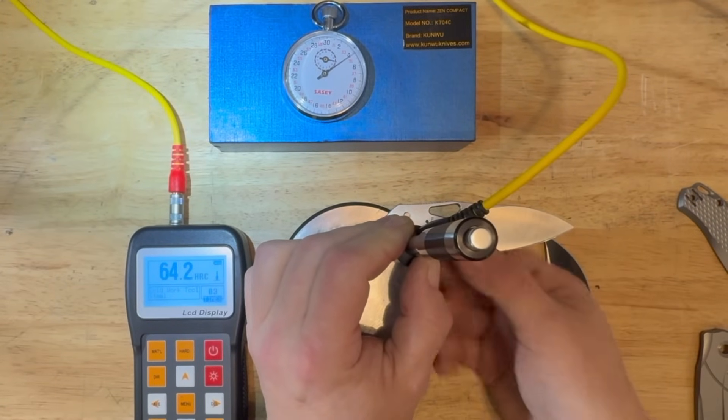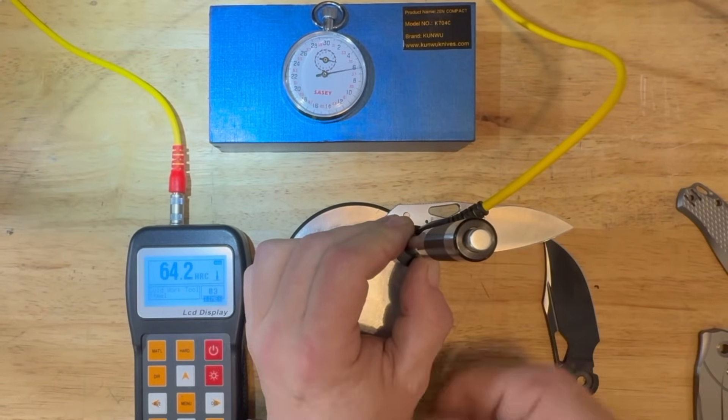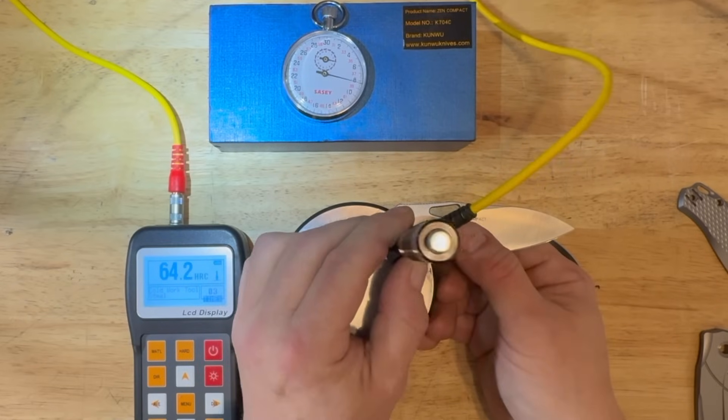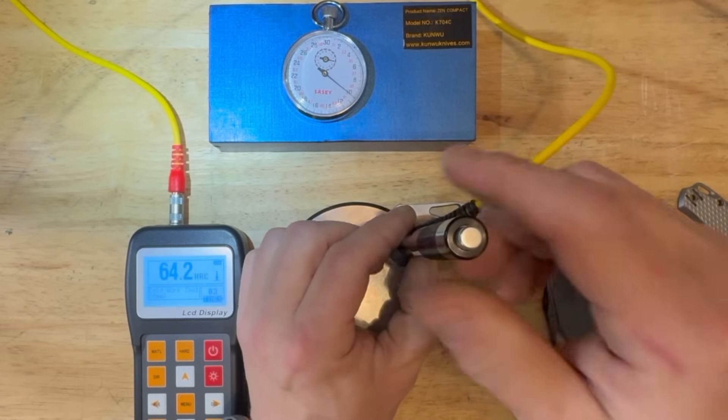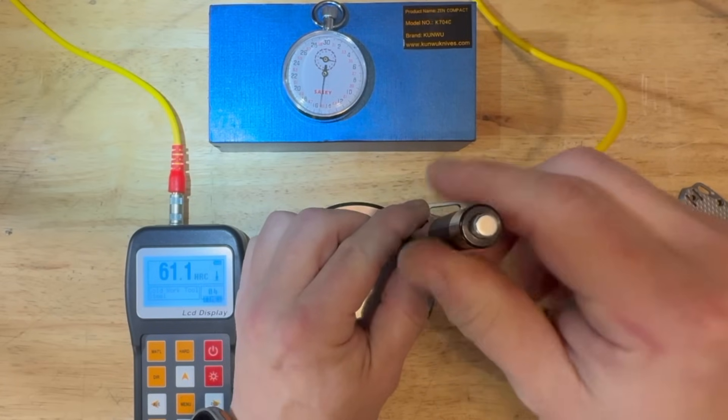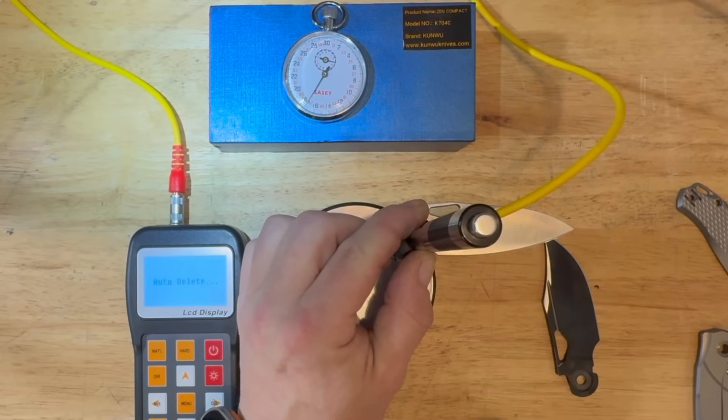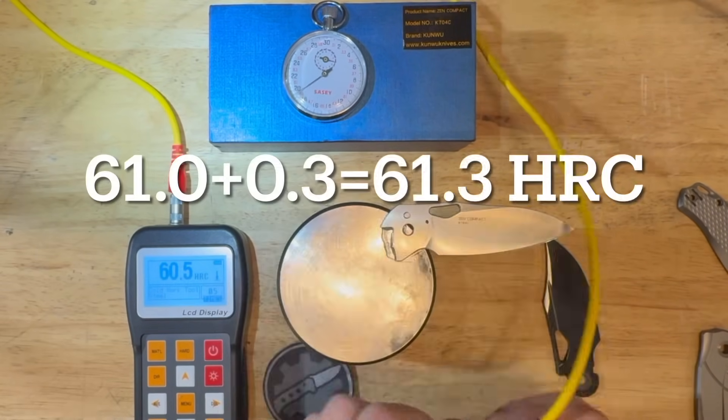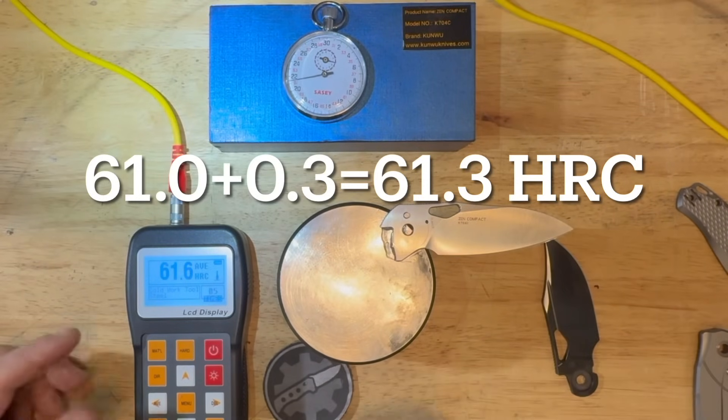Oops, I struck an outlier here. Usually happens when the probe hits the existing dent from a previous strike. So, I will have to remove that number from the average calculation. And the average coming up 61.3 HRC after the zero shift and outlier correction.